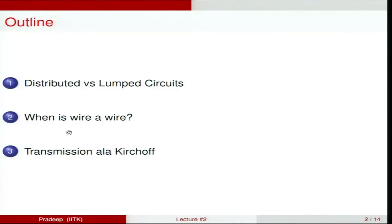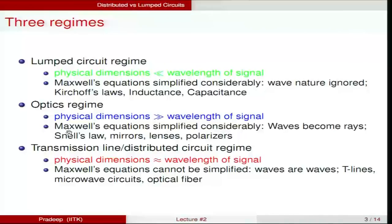A wire is actually made up of a conductor, and this conductor responds in a certain way to electromagnetic fields. We cannot ignore that reality of a wire being made up of an actual conductor. We will be talking about when is a wire a wire, and when we need to actually model the wire itself. Then we will consider some transmission theory along Kirchhoff's laws and show that Kirchhoff's laws are nothing more than Maxwell's equations under certain conditions.